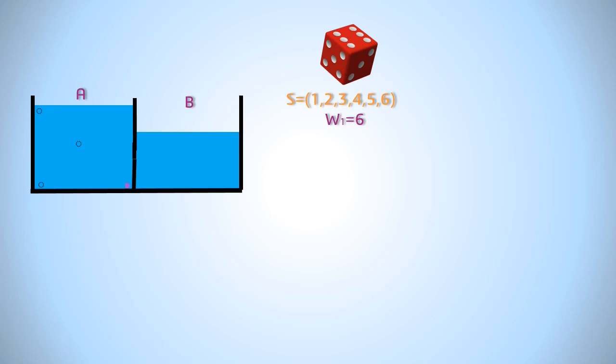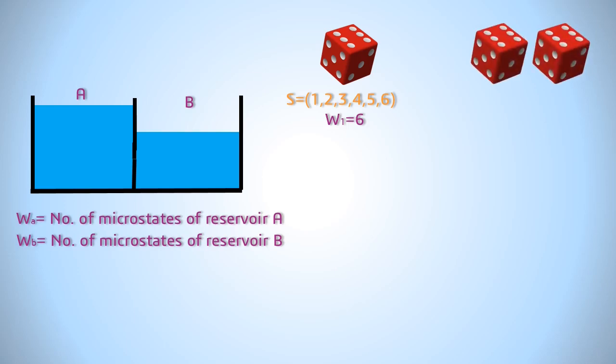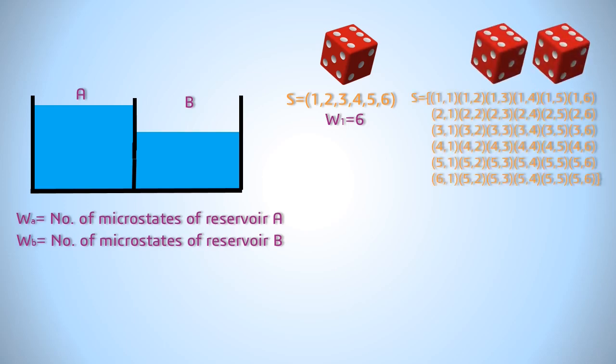Similarly, all the other molecules have certain number of microstates in which they can be. Let us say the total number of microstates in A is WA and B is WB. Now let us get back to our dice.